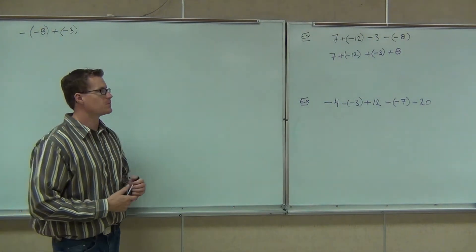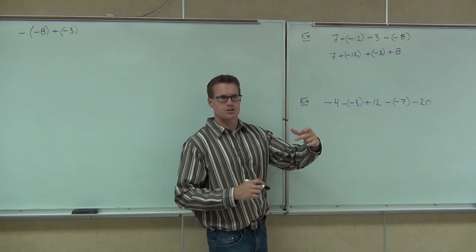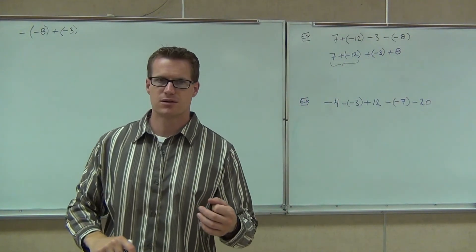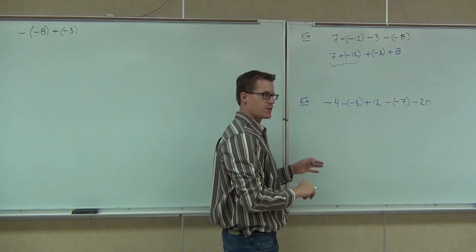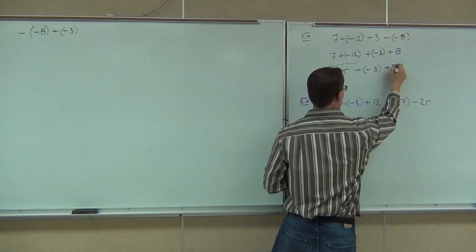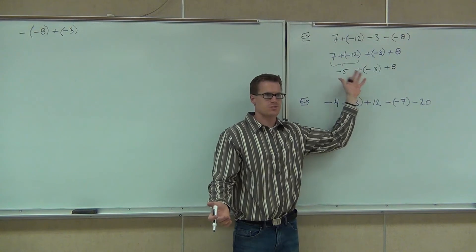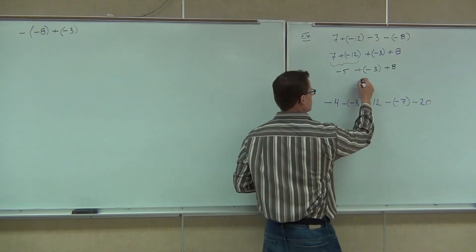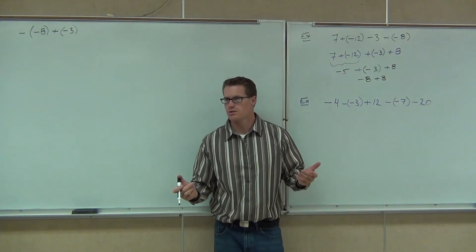Okay, we're about to finish on the very first one up here. We've already changed everything to pluses. Hopefully you were able to go from the left two by two and get these. The 7 plus negative 12 — we have different signs there, so we're going to subtract and keep the sign of the larger — we get negative 5. Then negative 5 plus negative 3 — that's the addition rule. Same sign, we add them and keep the common sign: negative 8. And negative 8 plus 8? Zero. Different signs, subtract, you get zero.